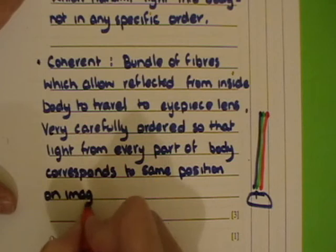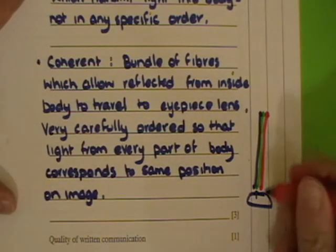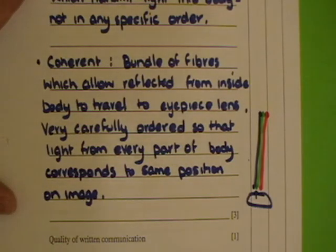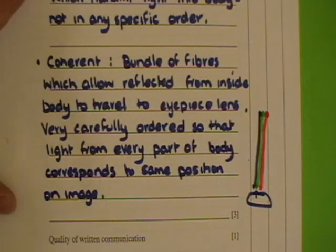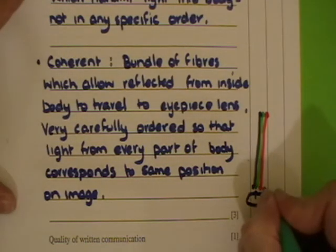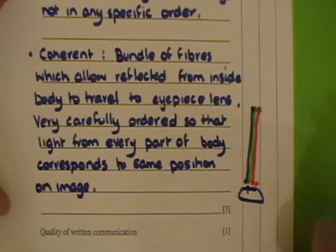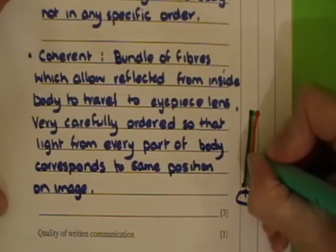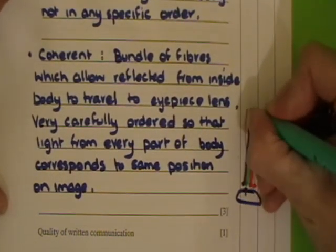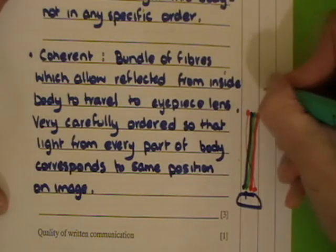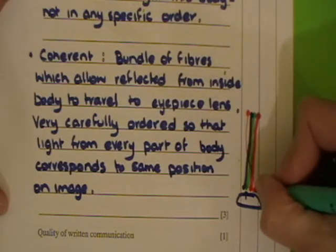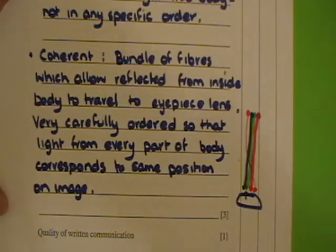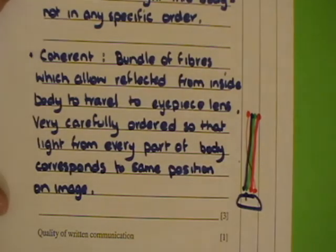The problem would be if one of those fibers were twisted, so that it was coming out somewhere different. Then the person looking at it sees this part here, but it actually corresponds to over here — and it doesn't make sense. The image will be distorted.